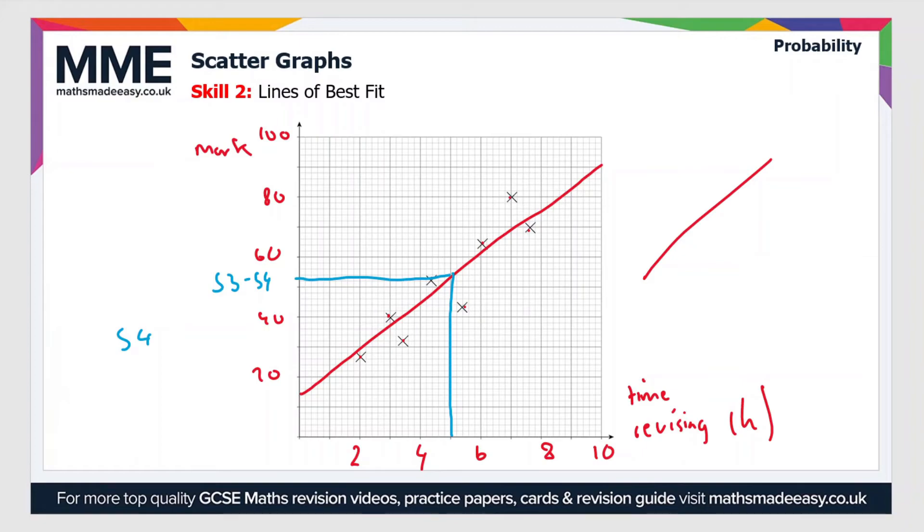Now you don't have to be especially precise in this, and there's always a little bit of leniency depending on how you draw your line of best fit, but something in the range 50 to 60 would usually be an acceptable answer.